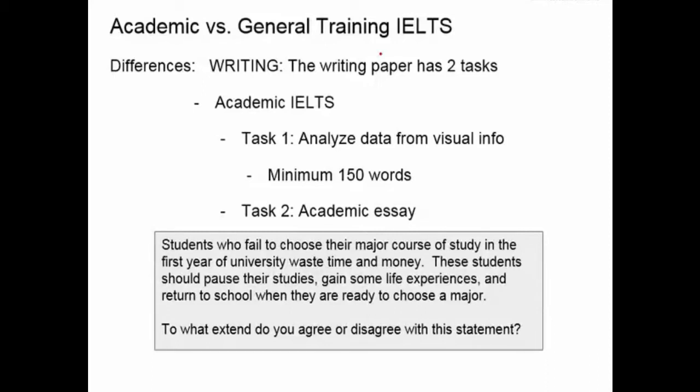In the academic IELTS, task one is worth one-third of your points and task two is worth two-thirds of your points. So it's better to spend more time on task two. Most students spend about 20 minutes on task one and then choose to spend about 40 minutes writing task two.